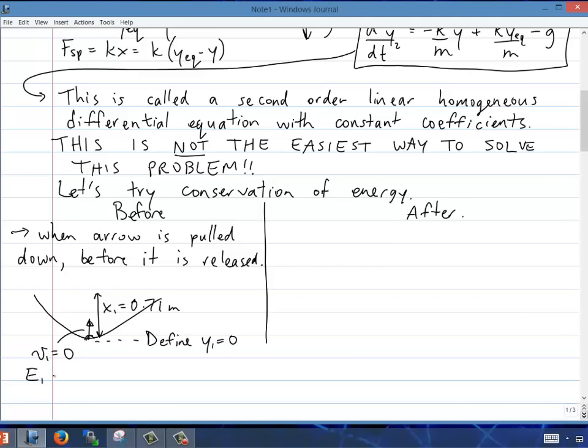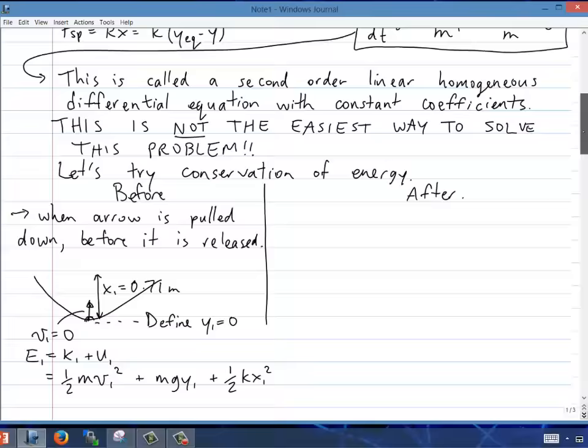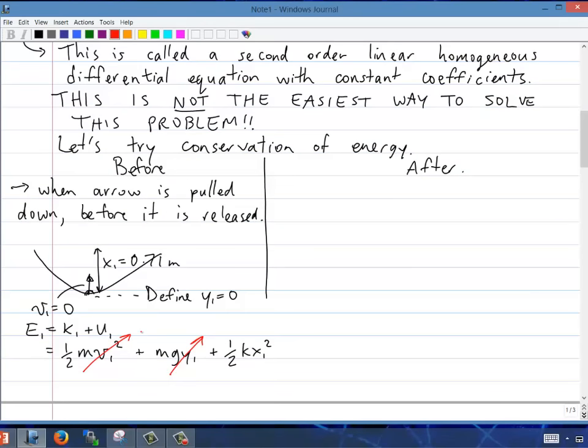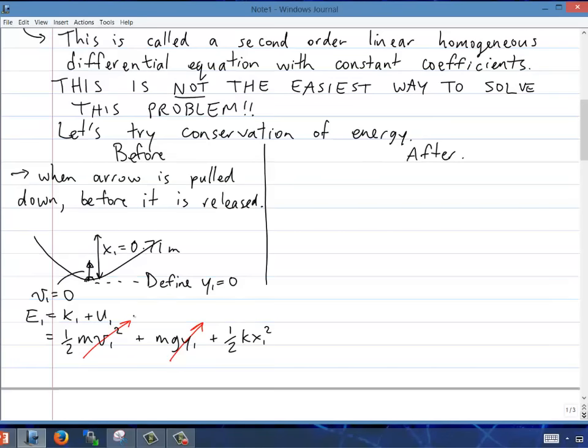So E1, which is the initial mechanical energy of the arrow, is the kinetic energy plus the potential energy: ½mv1² + mgy + ½kx² for the gravitational and elastic. So v1 is zero and y1 is zero, so those two parts of the energy are zero. And so the initial total mechanical energy is just ½kx1².